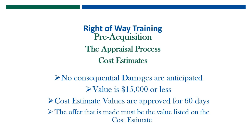Also with the cost estimate, there is no range of value. The offer that is made must be exactly what is listed on the cost estimate for that parcel. So if that parcel has a value of $500, that's what the offer should be, because there is no range of value when it comes to the cost estimate.